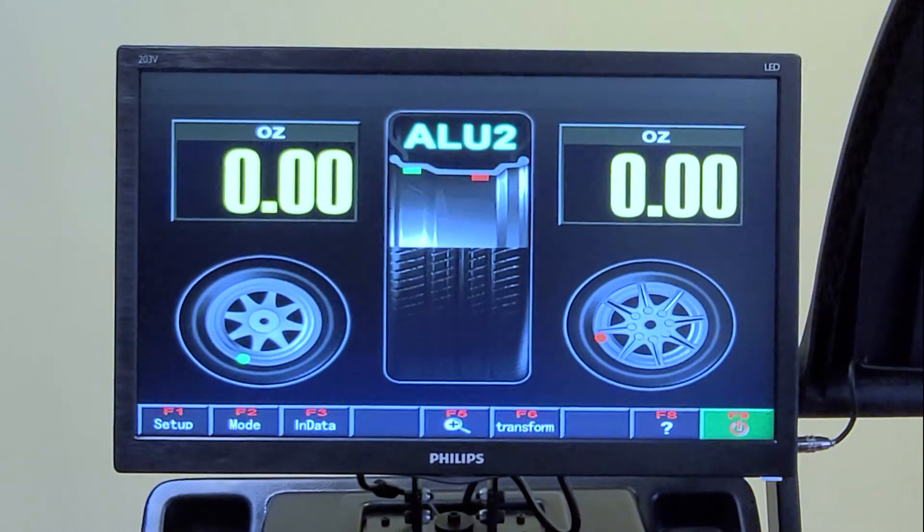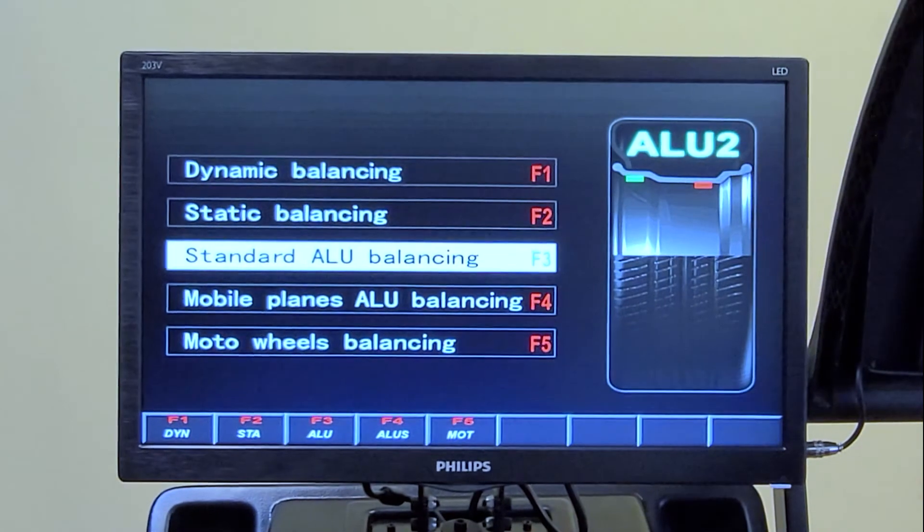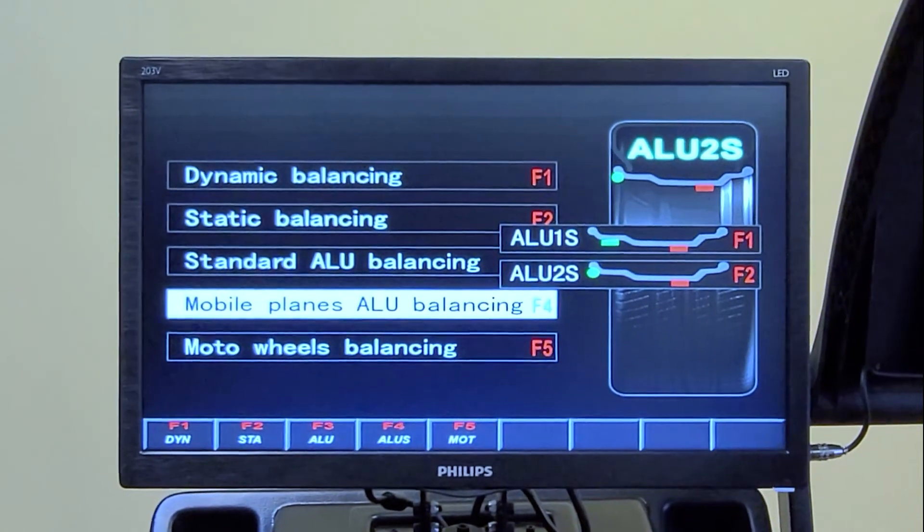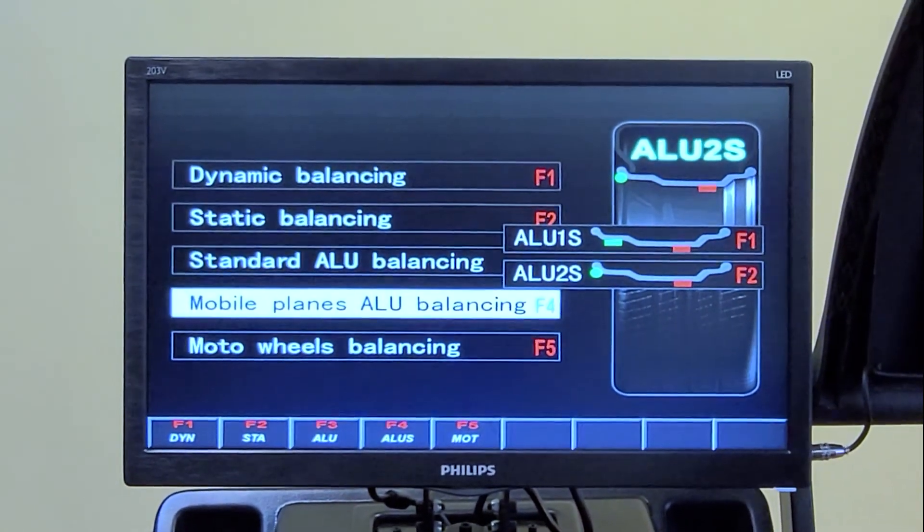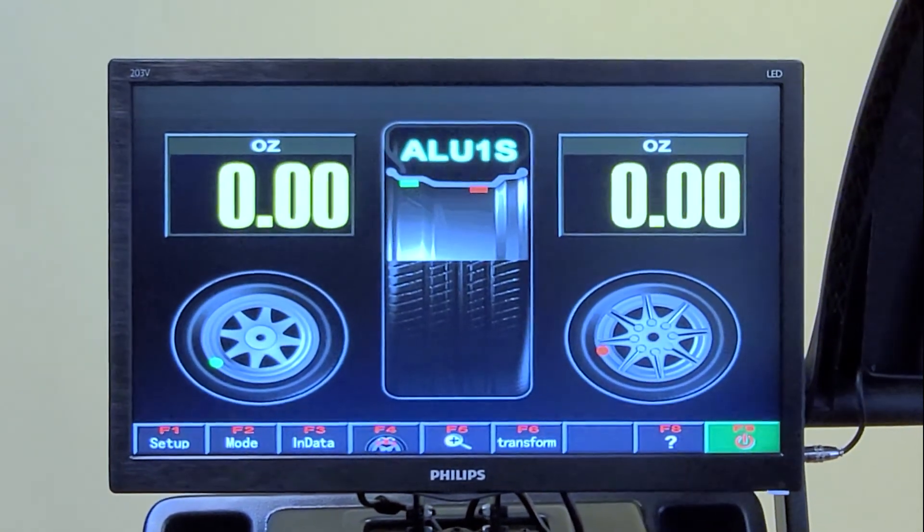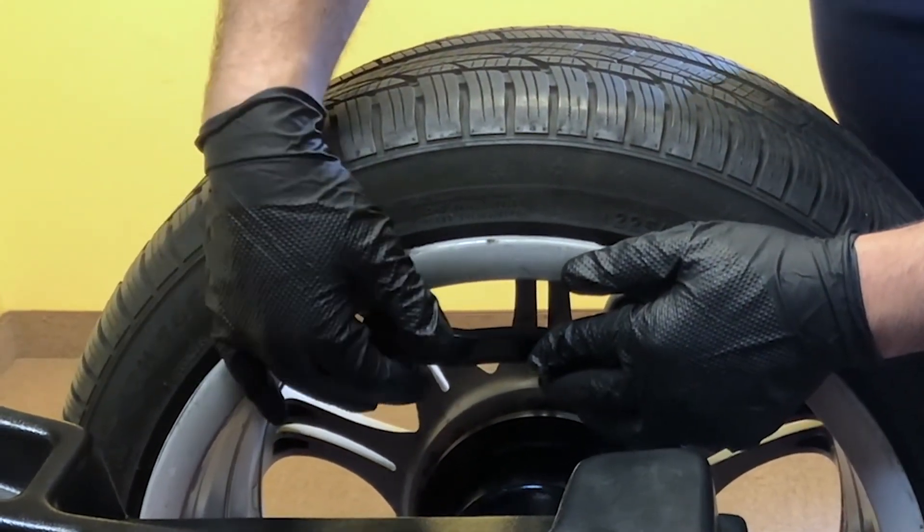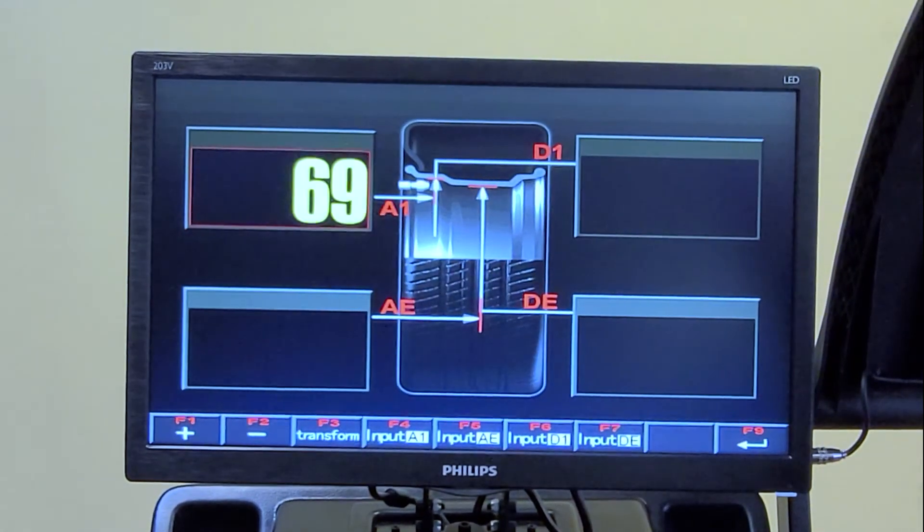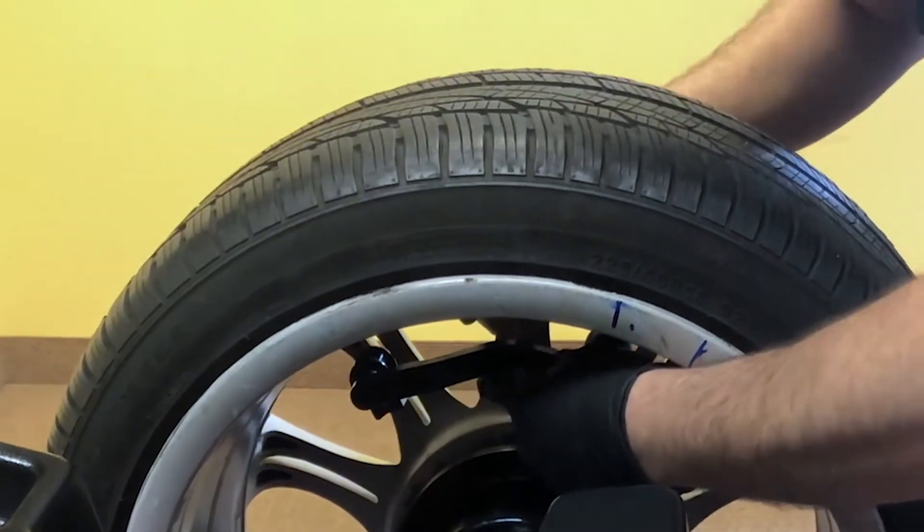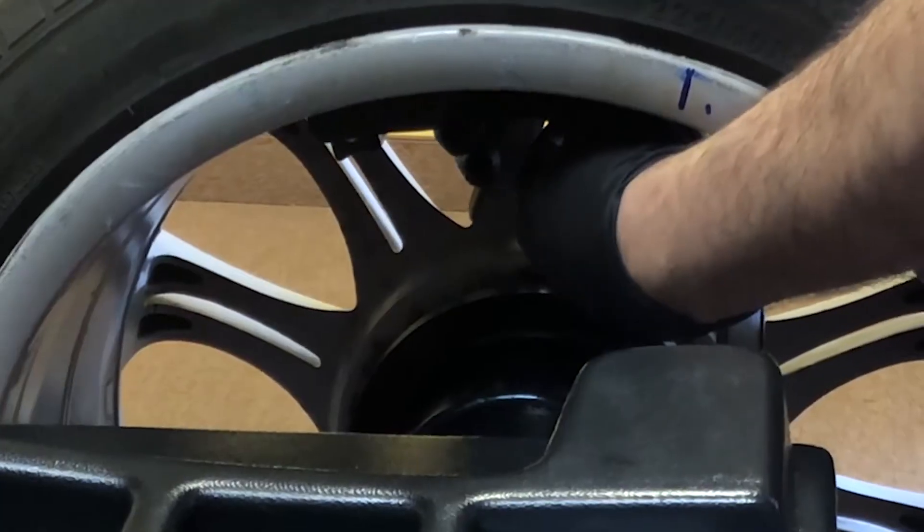Now we're going to show you the aluminum S mode. Go again to F2 to select the mode. Then F4 for mobile plane balancing. Choose F1. For this mode, you're going to use the ruler and measure where you want the weight to stick the wheel. Then hit F3. When you hear the beep, go select the second location. Once you stop, it's going to record the measurement. You're all done.